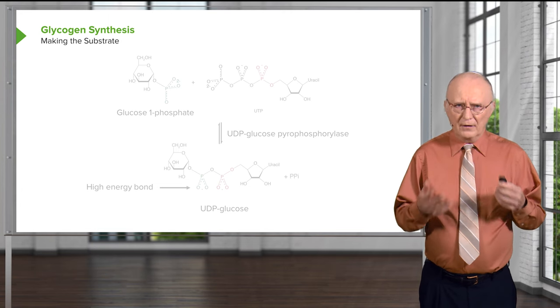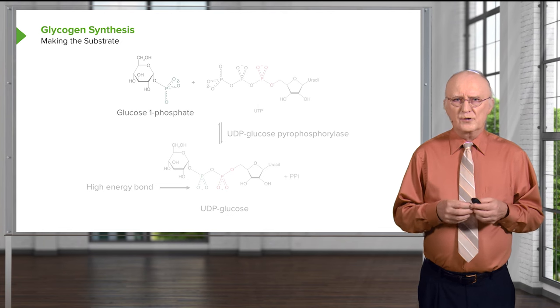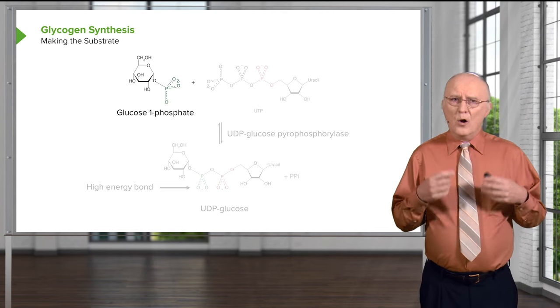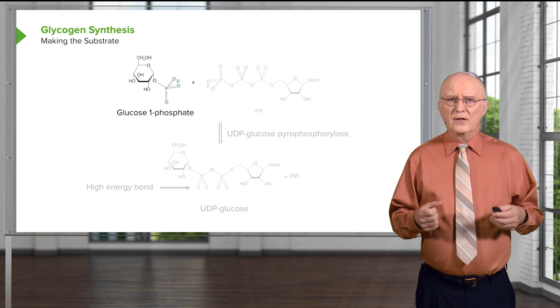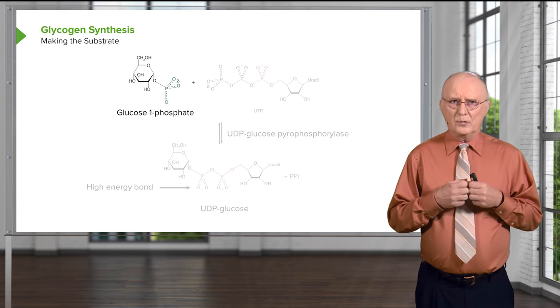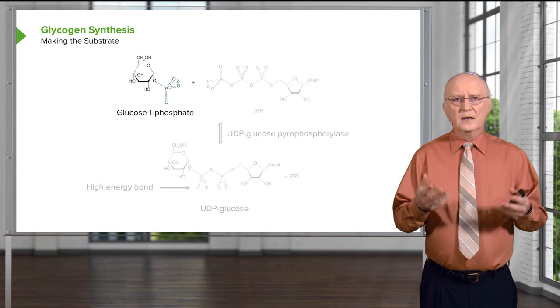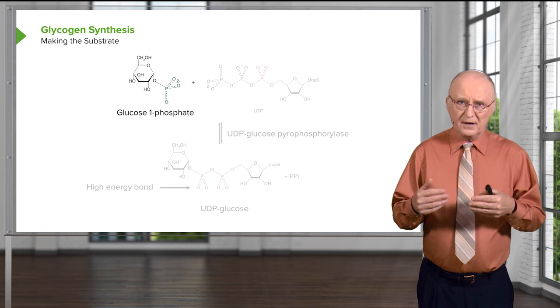In the synthesis of glycogen, we start with glucose 1-phosphate. Where would glucose 1-phosphate come from originally? Well, imagine that you had a cell that had gotten a bunch of glucose into it. The cell could use hexokinase in the glycolysis pathway to convert glucose into glucose 6-phosphate.